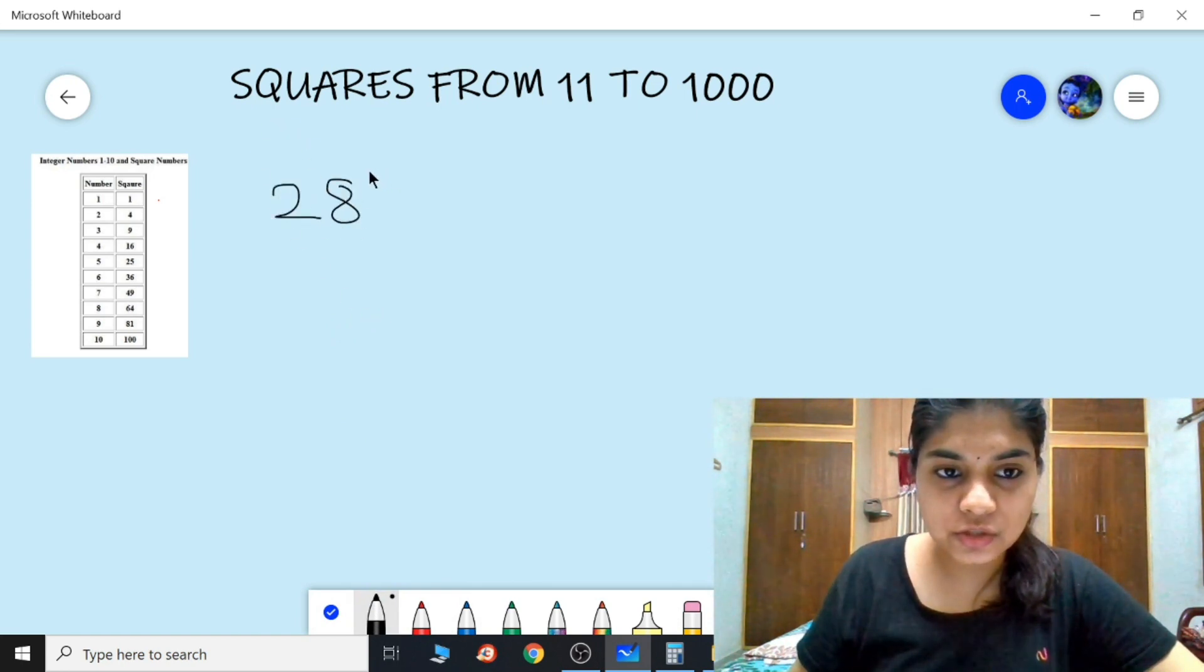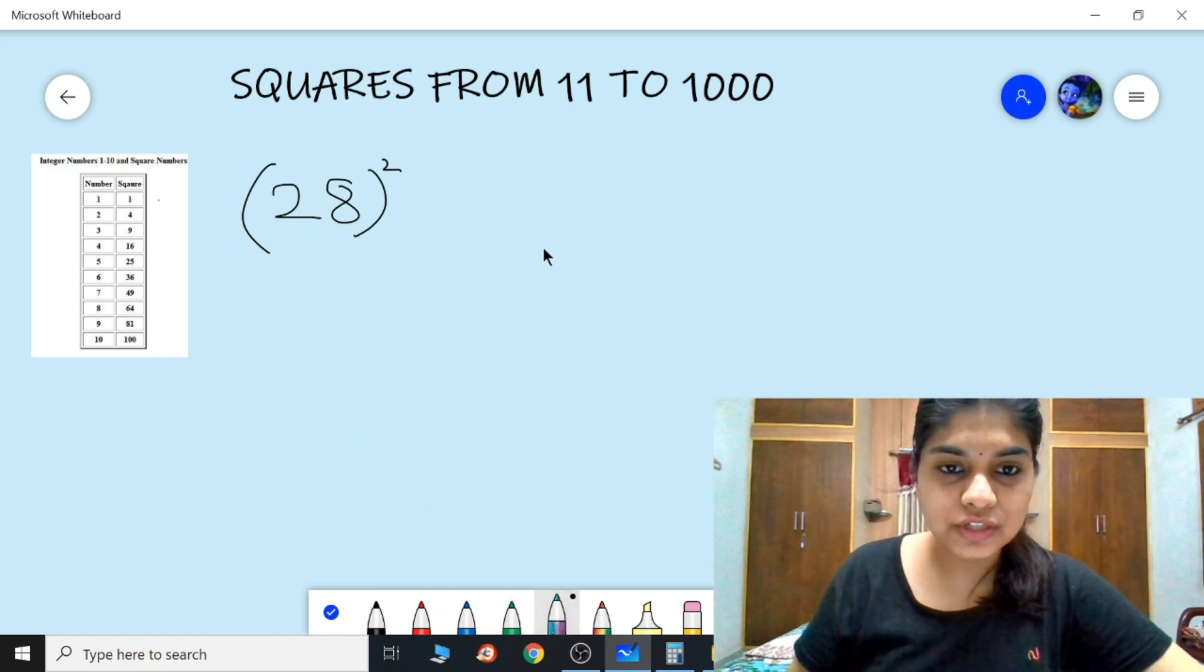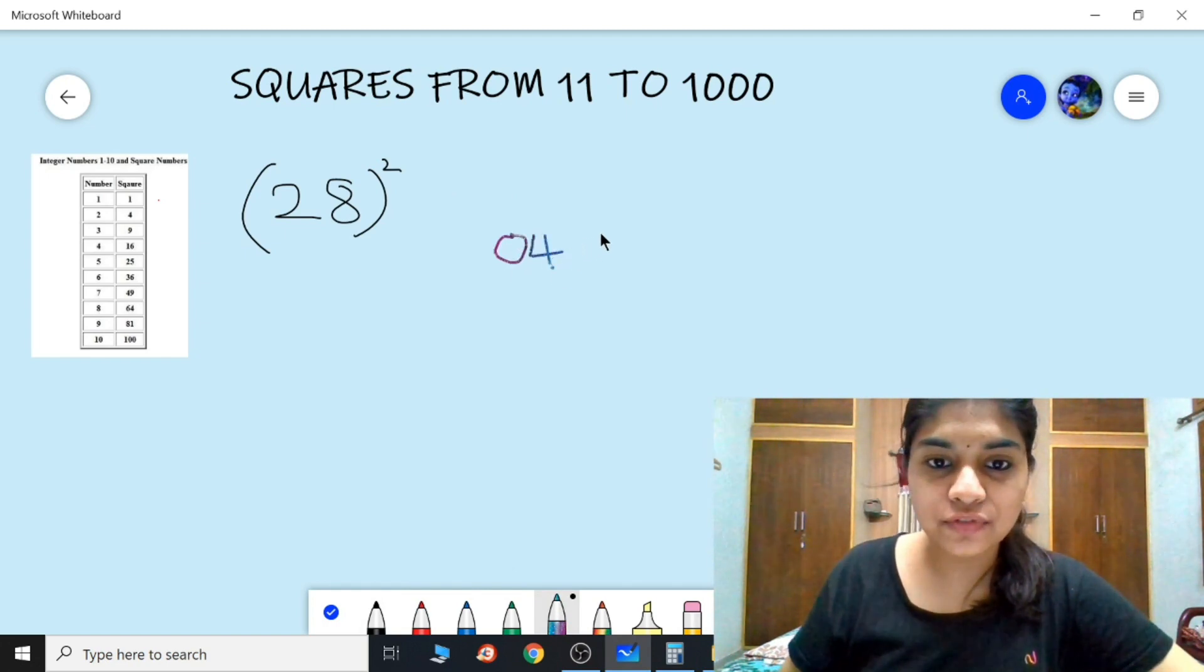To calculate the square of this, let's see the trick. First you need to write the square of 2, which is 04, and then the square of 8 is 64.